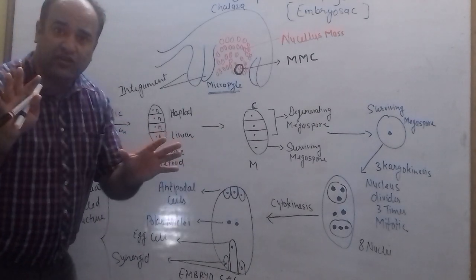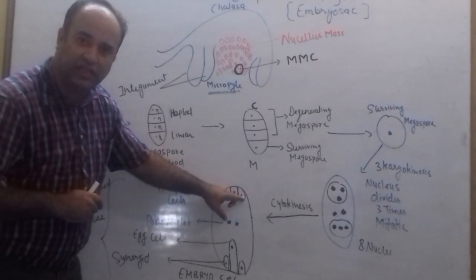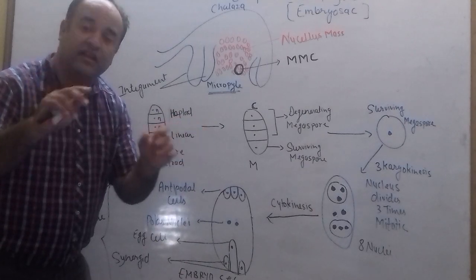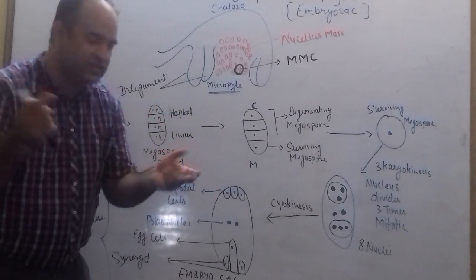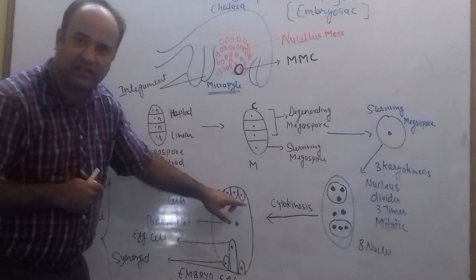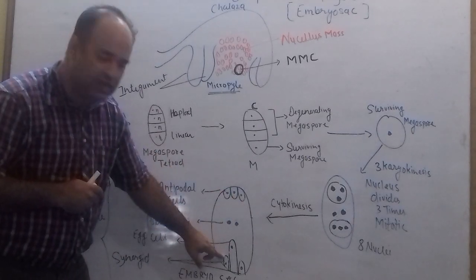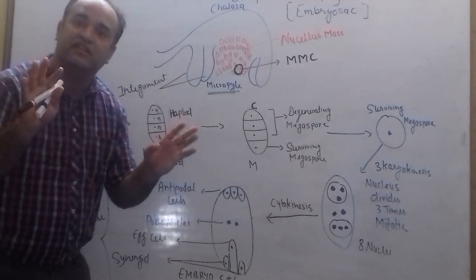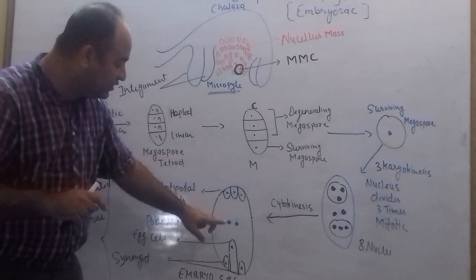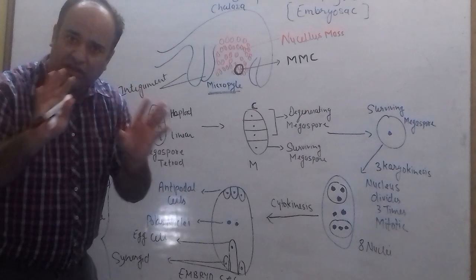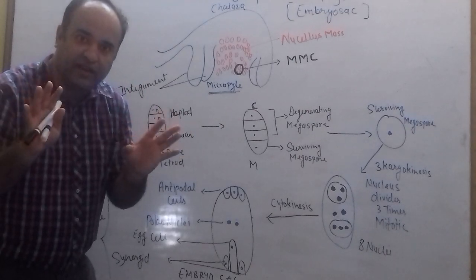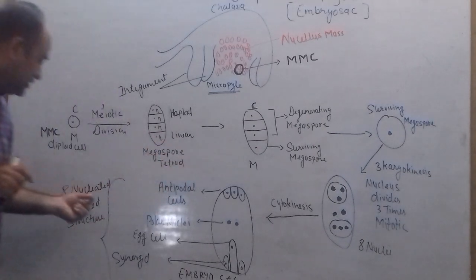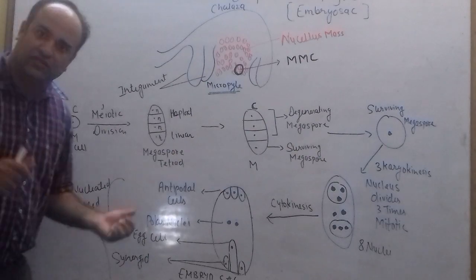We can confirm: there are 8 nuclei — 1, 2, 3, 4, 5, 6, 7, 8. And it is a 7-cell structure: cell one, two, three, four, five, six, and the seventh cell which is the large central cell. Cytokinesis does not take place in the polar nuclei — they remain without a wall between them. So this is the 8-nucleated, 7-cell structure.